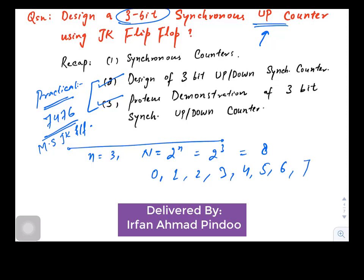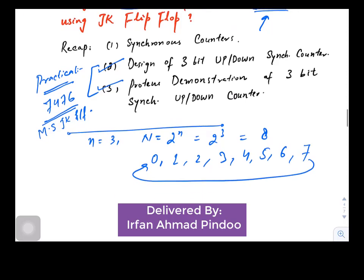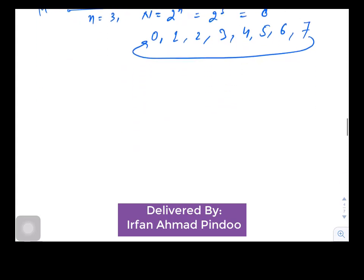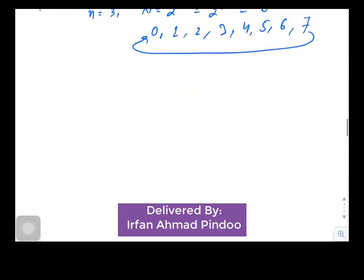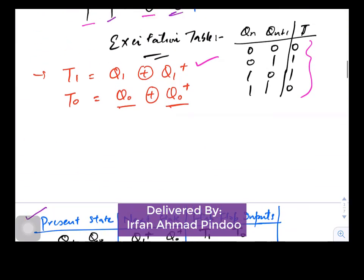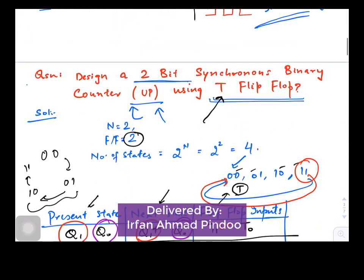Since it is an up counter, your counting would be from zero, one, two, three, four, five, six, and seven, then we should move back to zero. Now since we have to design it, it is being given in the question that we have to use JK flip-flop only. So let us start designing it.